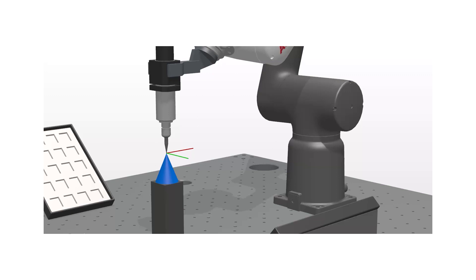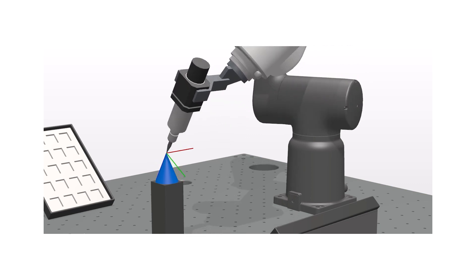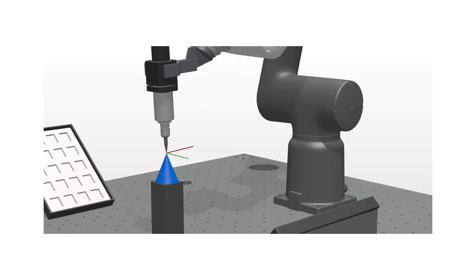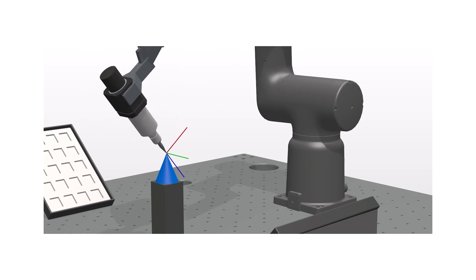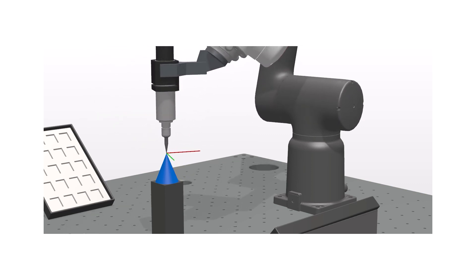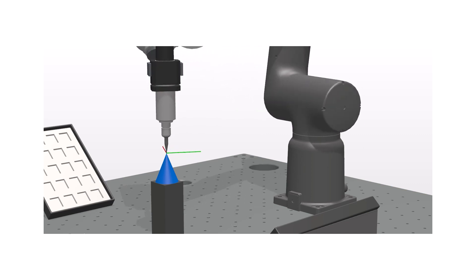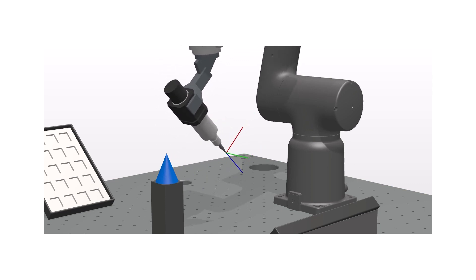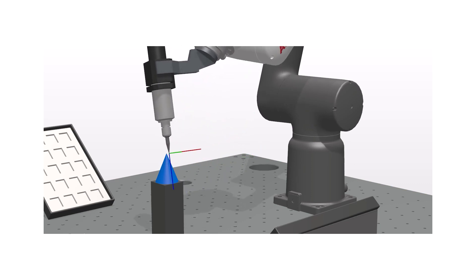Let's see another example on why we need a tool coordinate system. Here, the robot performs an operation called reorienting. In the coordinate system, there is a zero point where the X, Y, Z directions cross. This zero point is called TCP, or tool center point. In the example, the TCP is fixed. This is what happens without the defined tool coordinate system — it is impossible to keep the point in the same position.